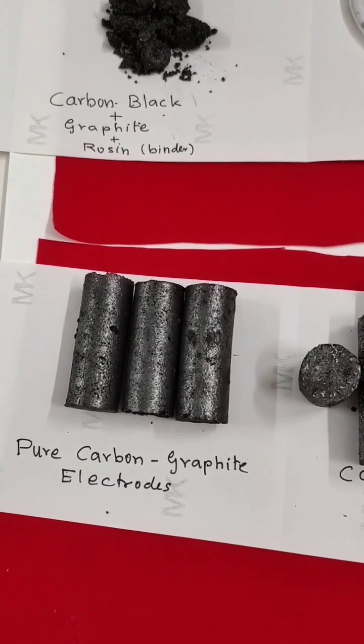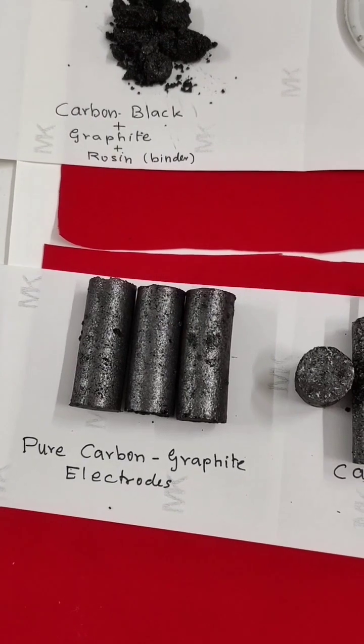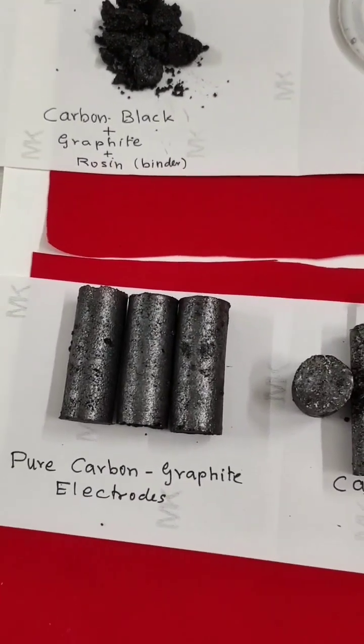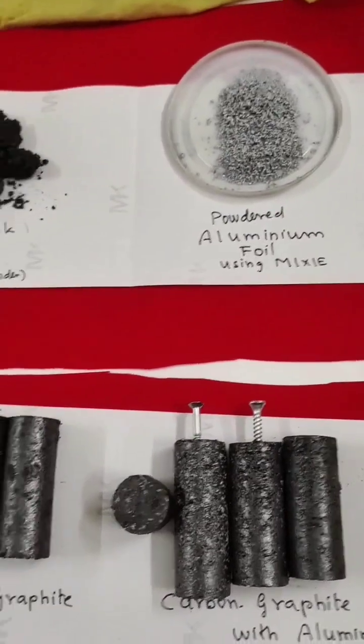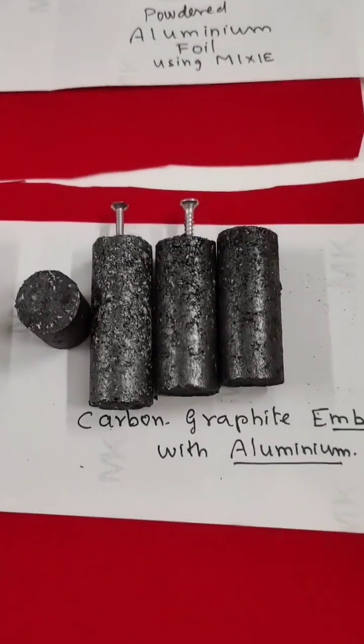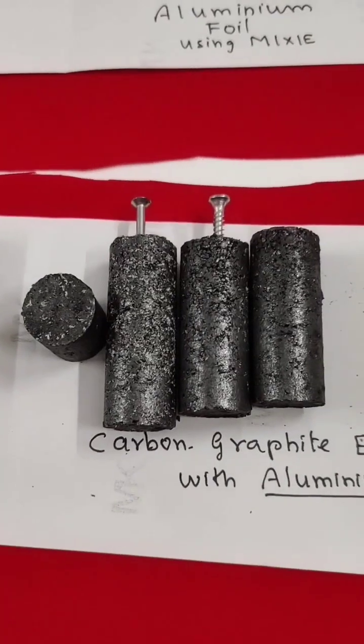I obtained this electrode, pure carbon graphite electrodes. Even in my previous two videos I have explained how I am preparing all these electrodes. This is conductive, less than 5 ohms. Similarly I mixed the same carbon black graphite with aluminum powder.